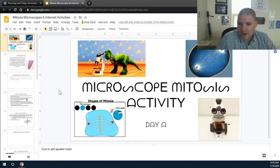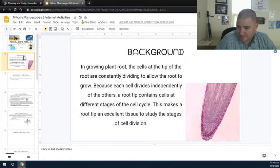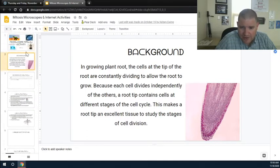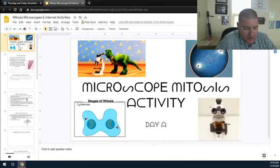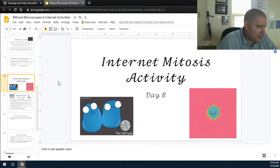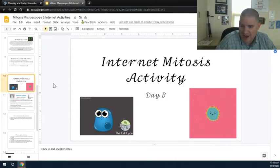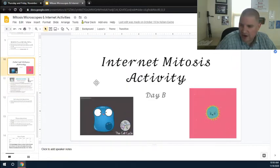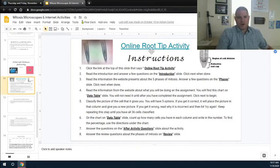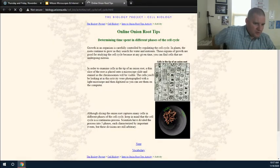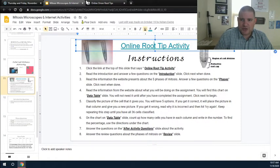There we go. So we've got our microscope mitosis activity. So we're going to start off with part A or not part A. This is part A at the very beginning, the actual microscope activity. We're going to scroll down to slide number 10 where we are going to have the internet mitosis activity day B happening. You can see the last six slides that are on there. Here's your instructions. You're going to click on the online root tip activity, which is right at the top. It'll open up a new web page, which is this. So you'll be able to have the slides going and having this website open at the same time.